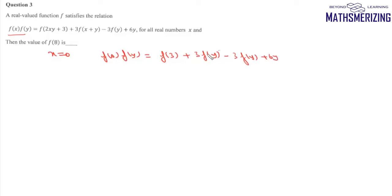We can cancel 3f(y) with 3f(y), so we have f(0)·f(y) = f(3) + 6y.